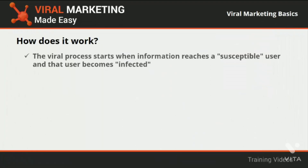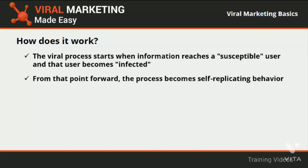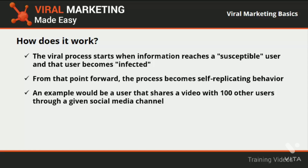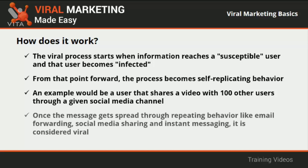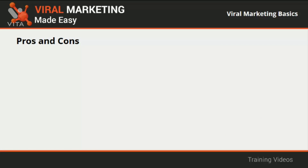How does it work? The viral process starts when information reaches a susceptible user and that user becomes infected — meaning they accept the idea, share it with others, and infect them with it. From that point forward, the process becomes self-replicating. An example would be a user that shares a video with 100 other users through a social media channel — each one of those users shares the same video with 100 other users, and so on. The advantages of a viral marketing service are high credibility, low costs, great reach, high efficiency, and the opportunity of continuous promotional adjustments.